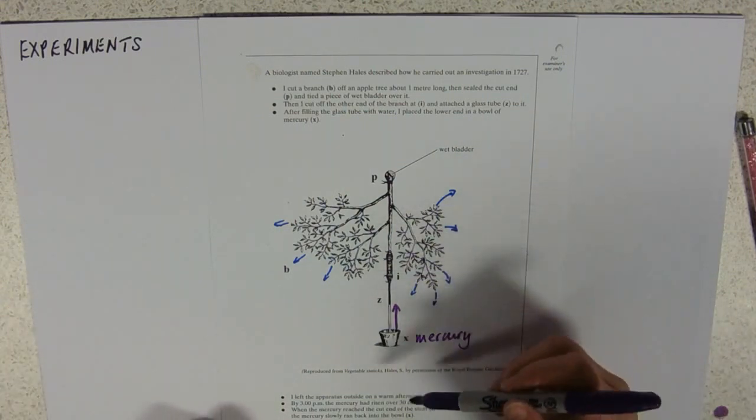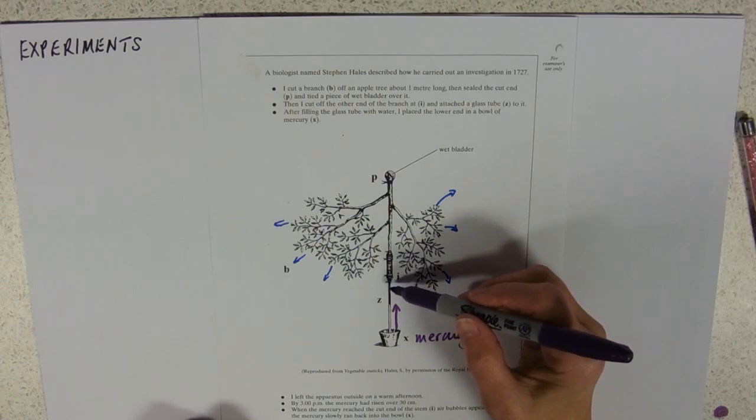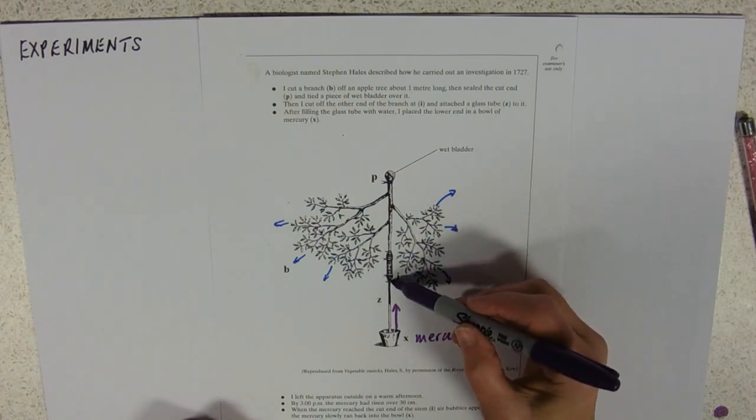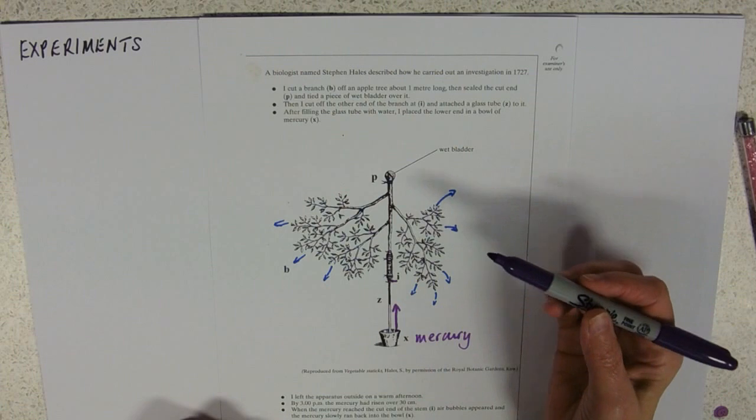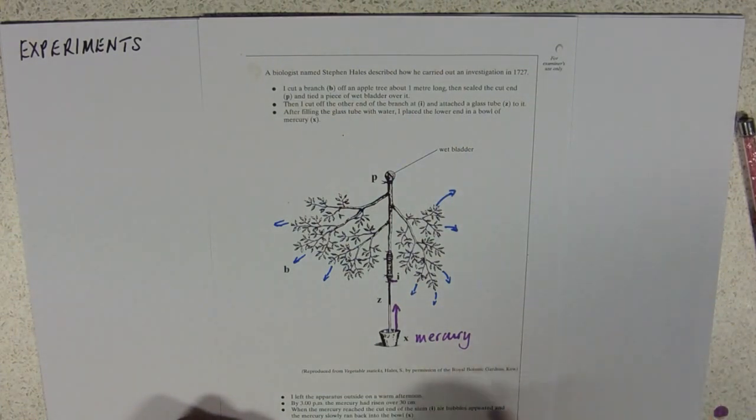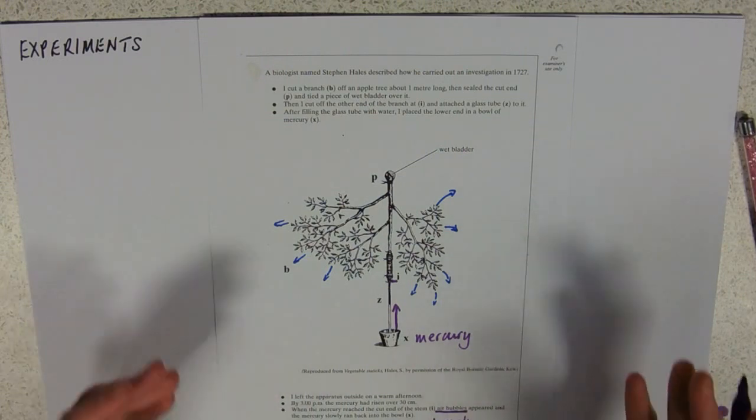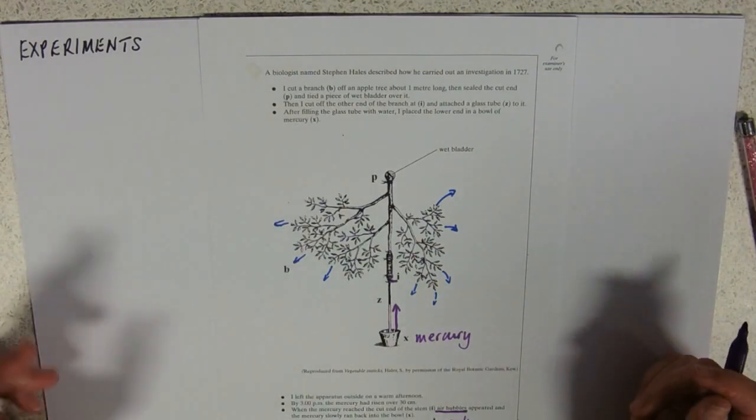And then it says, when the mercury reached the cut end of the stem, at eye, reached up here, air bubbles appeared and the mercury ran back into the bowl. So, the air bubble here is going to break the water column. And then you've not got that tension holding it up, and that's why the mercury drops down into the bowl.